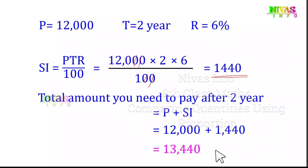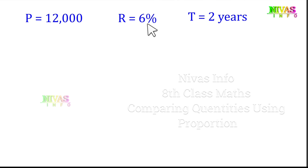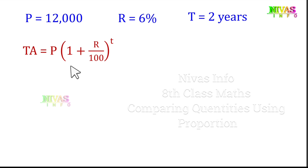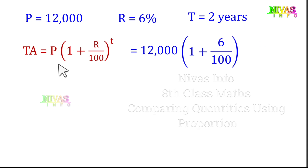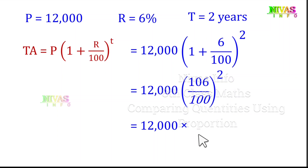Now, what is the total amount under compound interest? The total amount is equal to P into 1 plus R by 100, whole power T. Here P value is 12,000, R value is 6, T is 2. So the expression becomes 12,000 into 1 plus 6 by 100, whole power 2, which is 12,000 into 106 by 100, squared. That means 12,000 into 1.06 into 1.06.